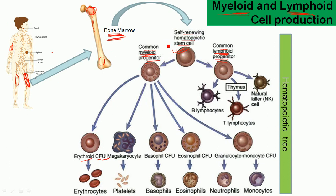This bone marrow has a special kind of cell called the pluripotent hematopoietic stem cell. These cells are self-renewing stem cells — they can produce a defined kind of cell and they are renewable, meaning they can produce themselves.